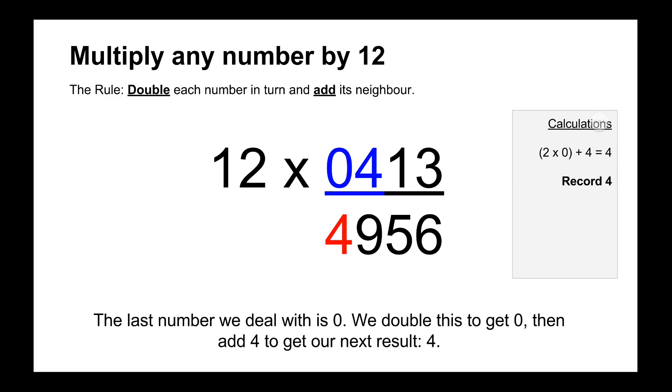And then the last digit in our sequence here is 0, so we do 0 times 2 is 0 and then we do plus 4 which is 4. So there's our answer there: 12 times 413 is 4956.